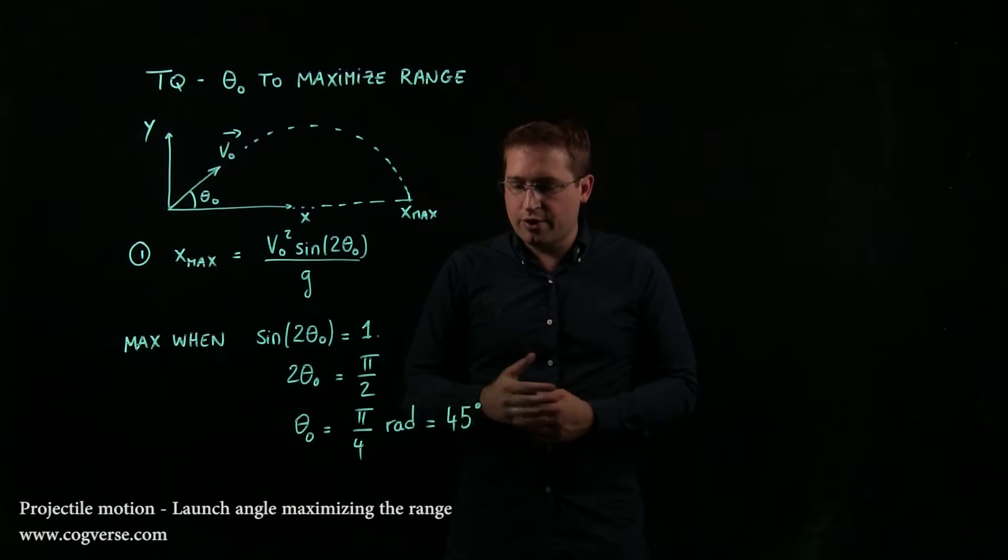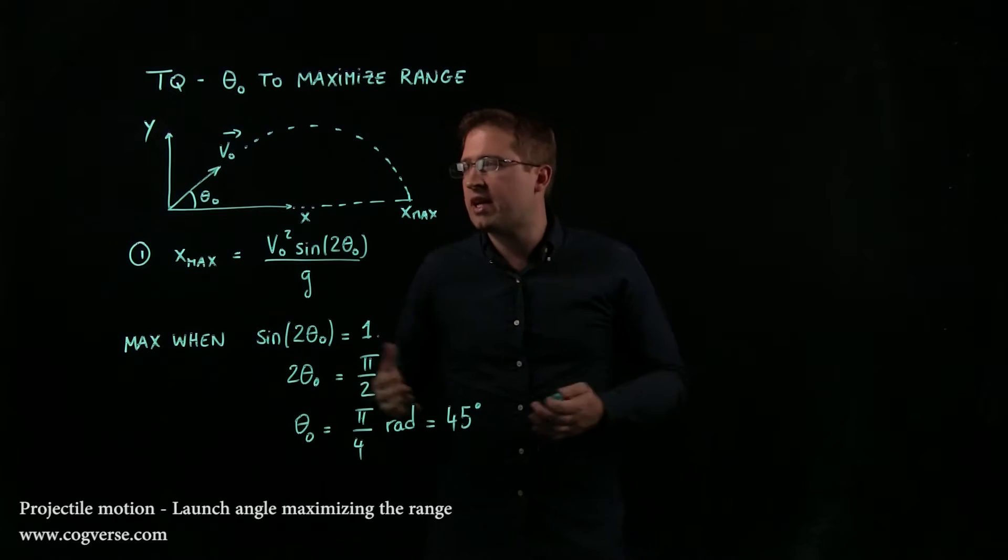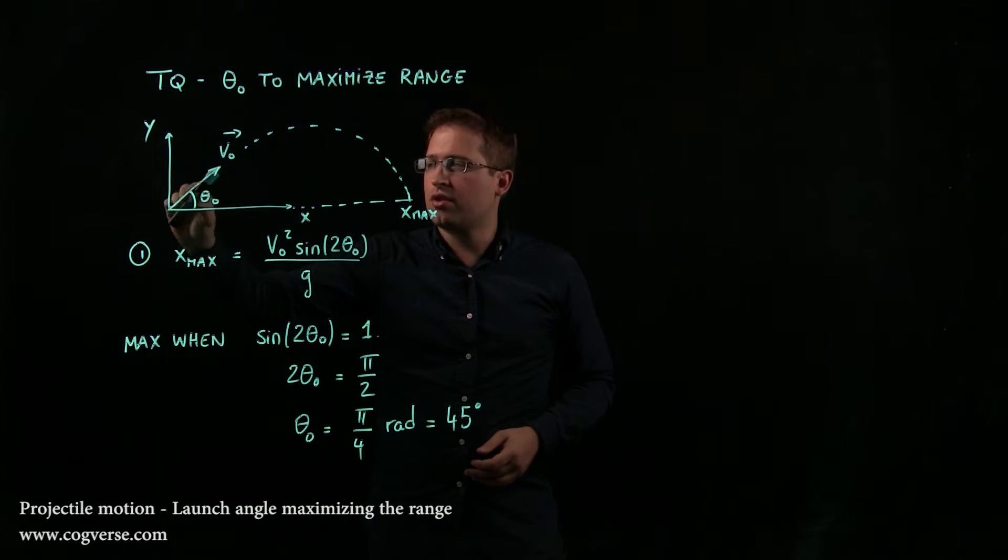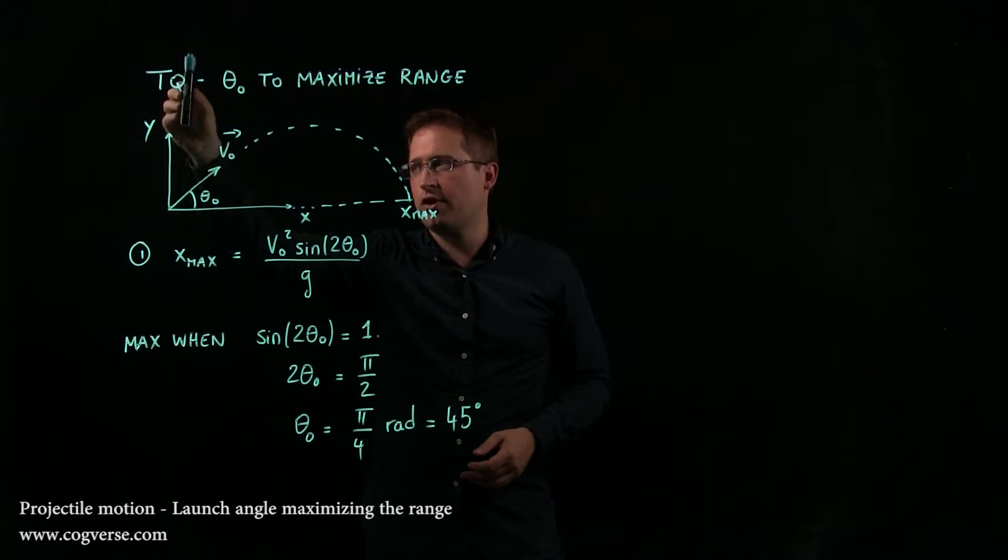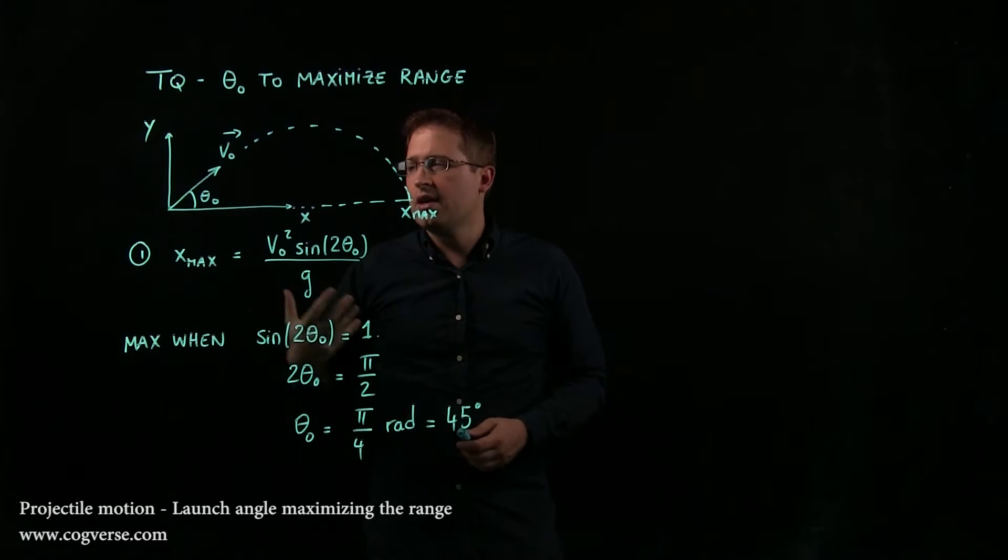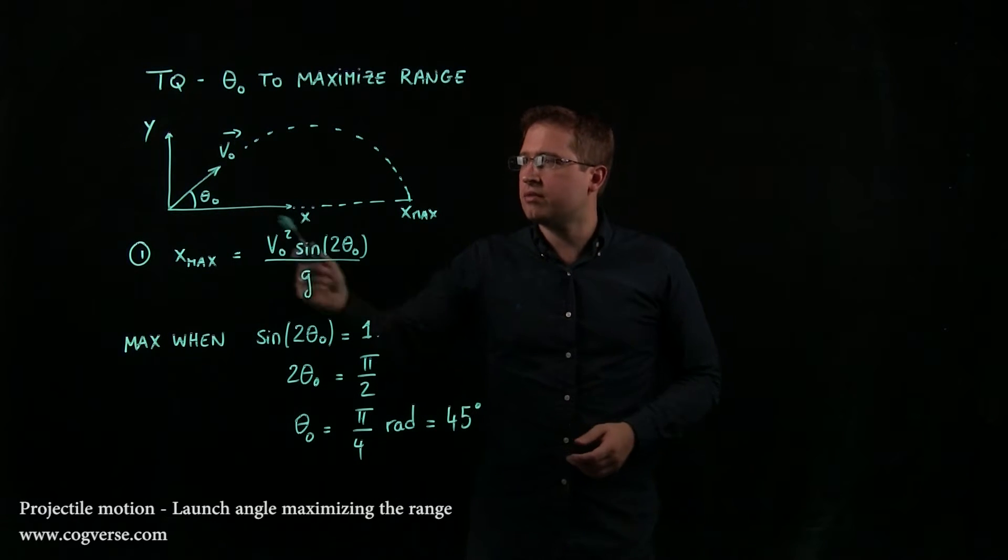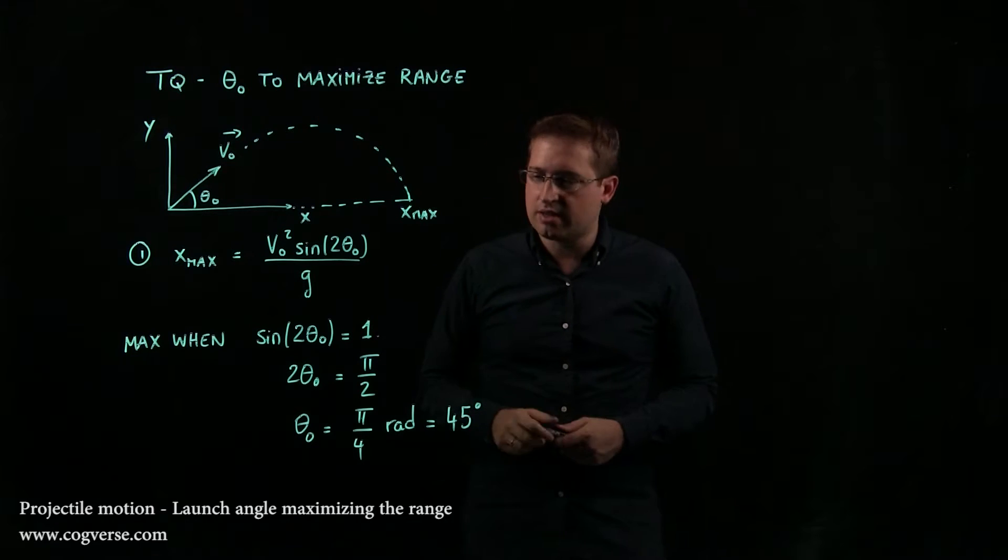So here's the first way to do it, and you find 45 degrees, which seems to make sense. If too small is going to not go far because you shoot the dirt, or too big is not going to go far because you go too high and you don't really go anywhere, somewhere in between, actually in the middle here, 45, ought to give you the maximum range, and that seems to make sense.